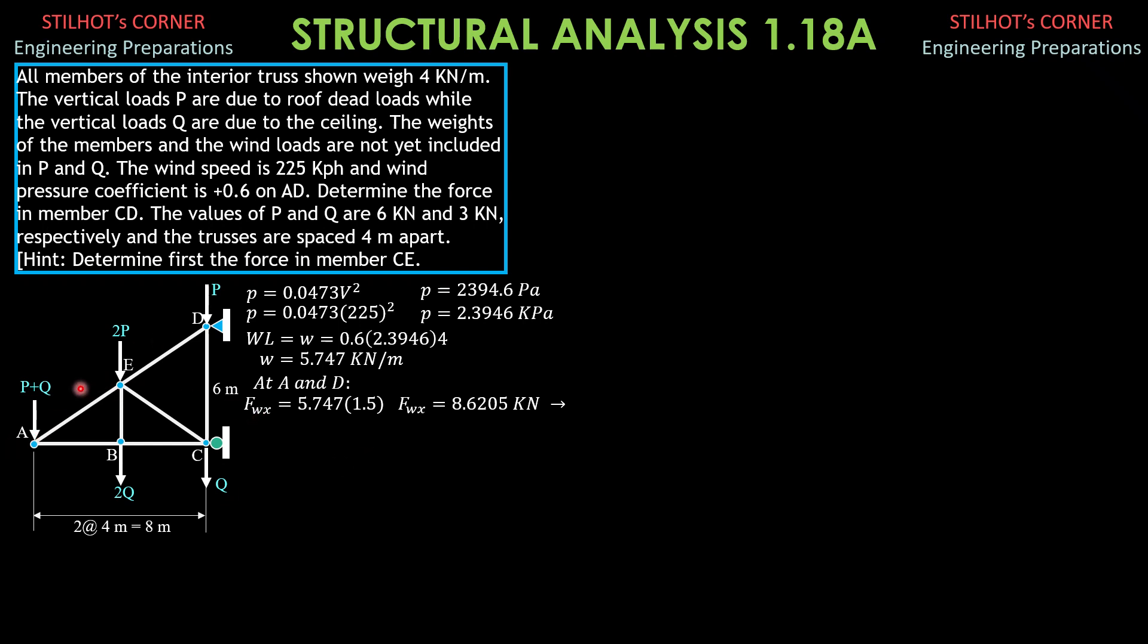What is important is the load, horizontal component of the wind load at E, which is times 2 of this value or 5.747 times 3 meters the vertical projection for this joint E here. So it is equal to 17.241 kilonewtons rightward. Since it is at E, that is important to be loaded.